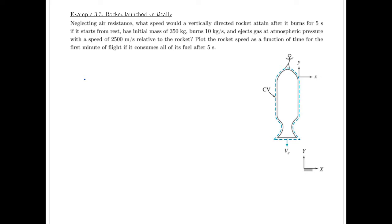what speed would a vertically directed rocket attain after it burns for 5 seconds if it starts from rest, has initial mass of 350 kilograms, burns its mass at 10 kilograms per second,